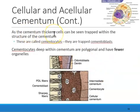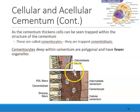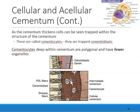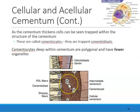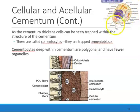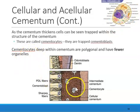As the cementum thickens, cells can be trapped within the structure of the cementum — we're getting more and more cementum deposited, and then cells known as cementocytes get trapped in here. Cementoblasts create cementocytes, and cementocytes get trapped here. Interestingly, cementocytes that are way deep within the cementum actually have fewer organelles.